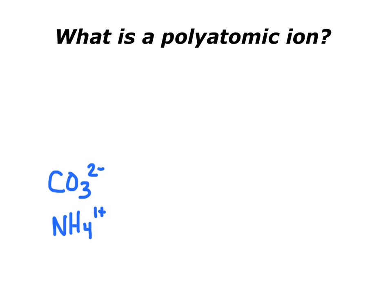The first thing we need to do is find out what a polyatomic ion is. When we break down the word: poly means more than one, atomic means atoms, and ion means it has a charge. Here are a couple examples of polyatomic ions — you can see that it has more than one type of atom because it has at least two capital letters.